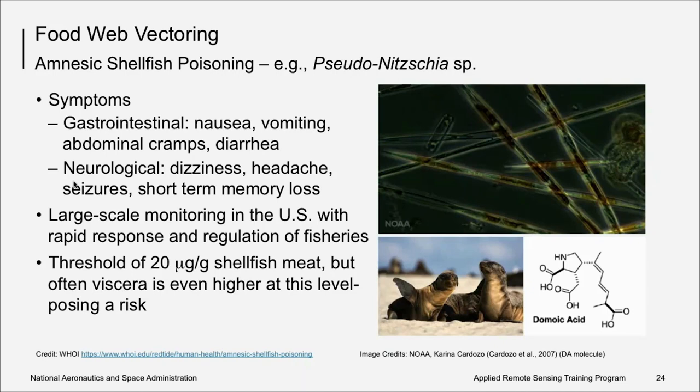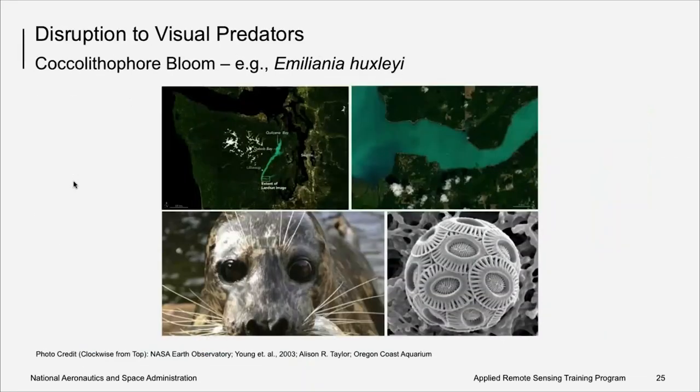Some algal blooms are so dense and scatter light so effectively that they cause visual disruption to predators. For example, this recent coccolithophore bloom in the Hood Canal in Washington State, USA. Visual predators, like the harbor seal on the bottom left, can have difficulty finding prey, such as the salmon, under these conditions.